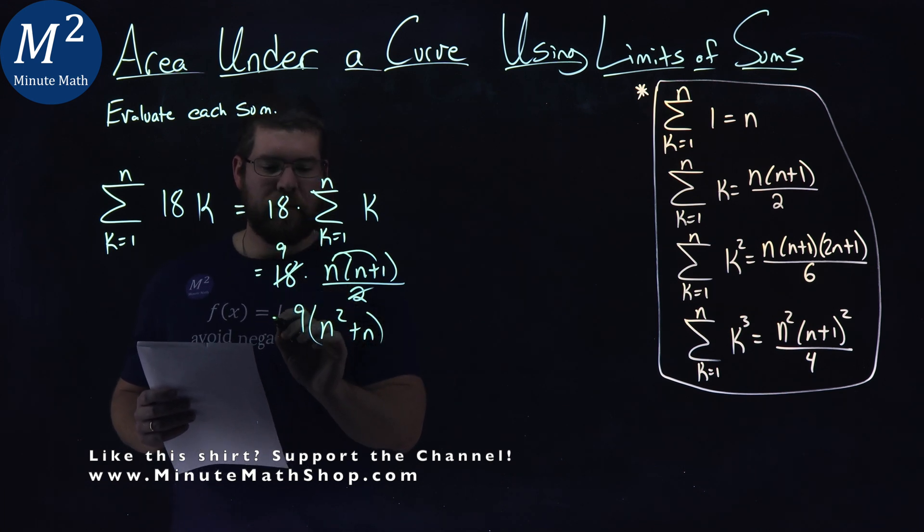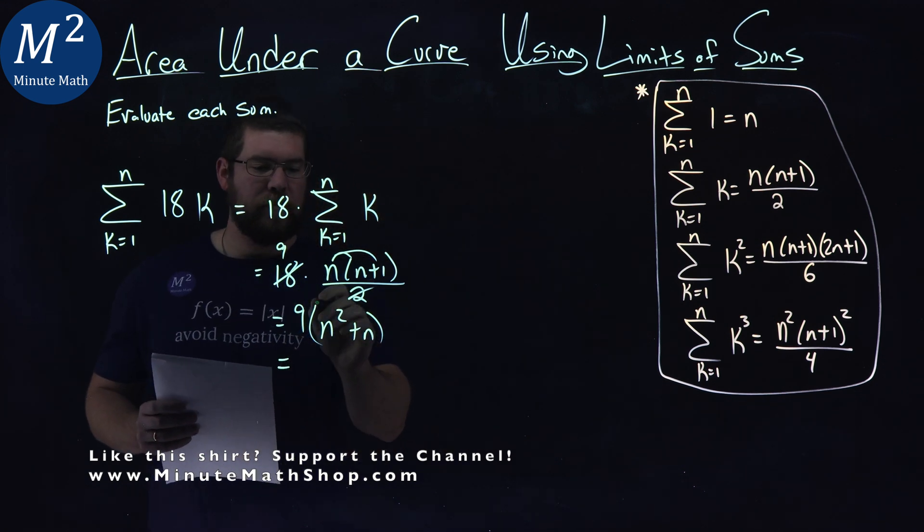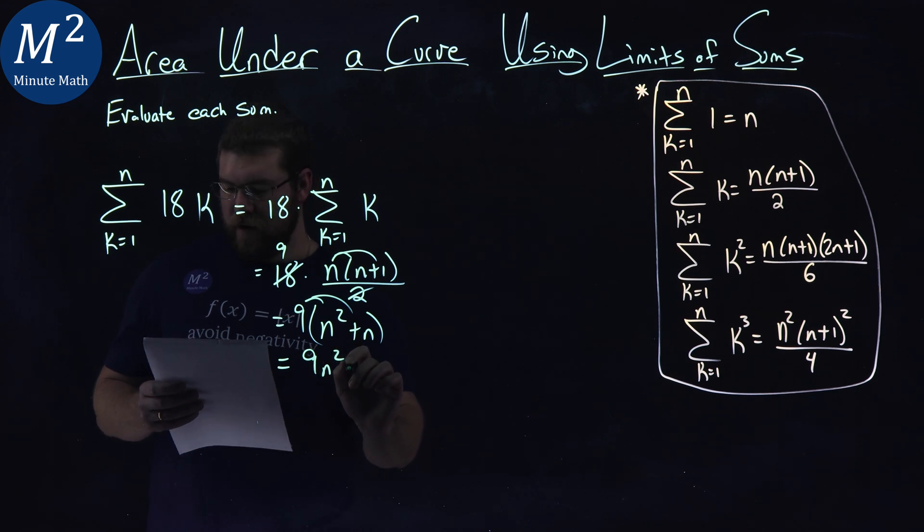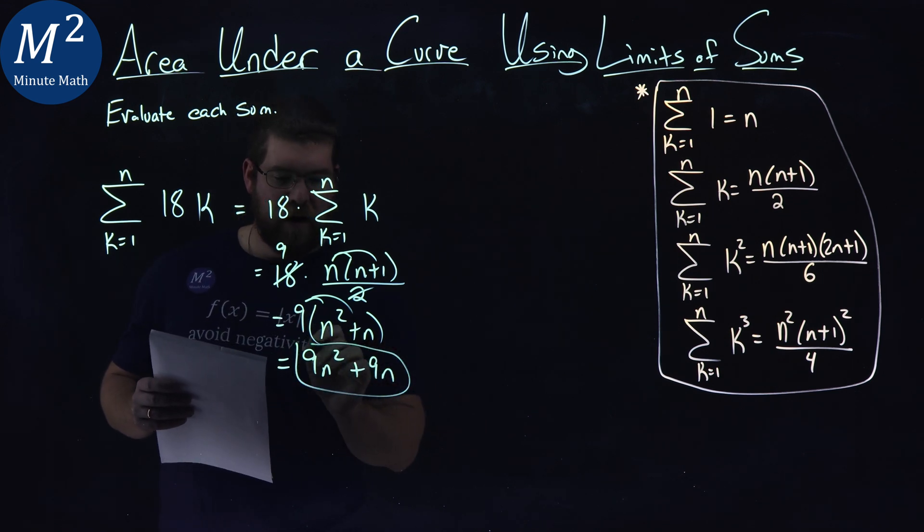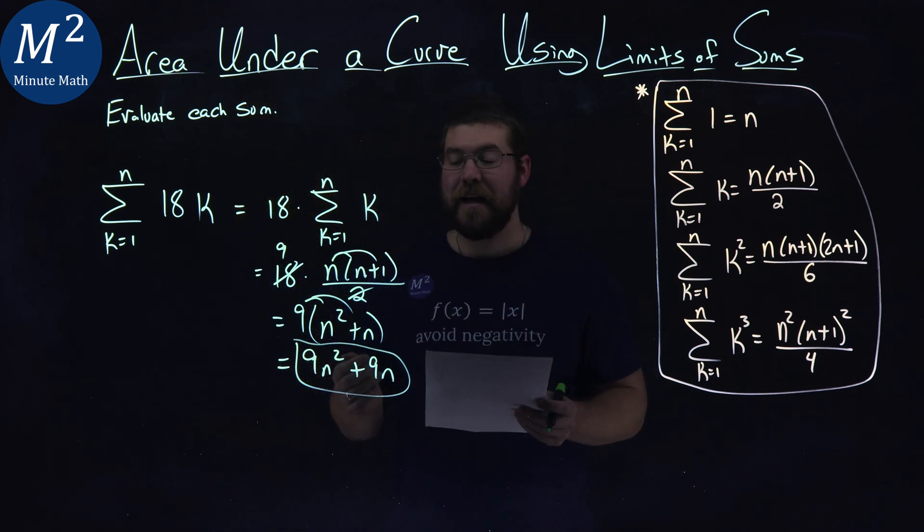So we have a 9 out here, times n squared plus n, which then simplifies to distribute that back in. We have 9n squared plus 9n. And there we have it. Our final answer here is just 9n squared plus 9n.